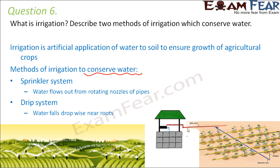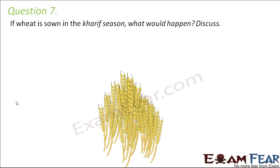The other system is the drip system, where water falls drop by drop near the roots of each plant. From the well there comes a main pipeline, connected to a sub-main pipeline, from which perpendicular pipelines extend. Water comes out in drops, preventing any water wastage. These two systems are quite prevalent these days and they conserve water effectively.